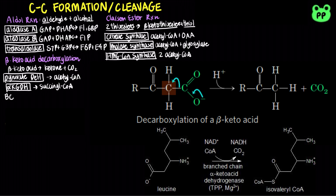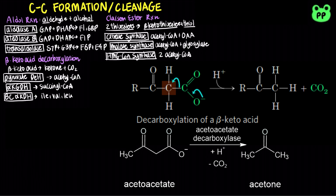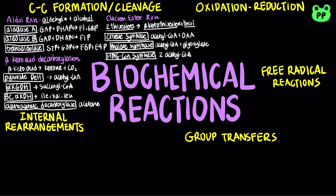Branched-chain alpha-keto acid dehydrogenase catalyzes the catabolism of branched-chain amino acids, including isoleucine, valine, and leucine. Finally, acetoacetate decarboxylase is involved in ketone body production, which converts acetoacetate to acetone.